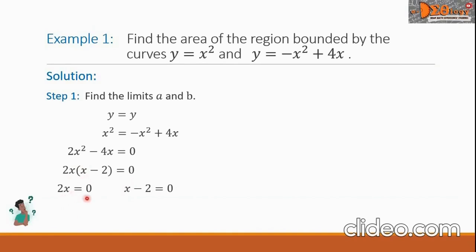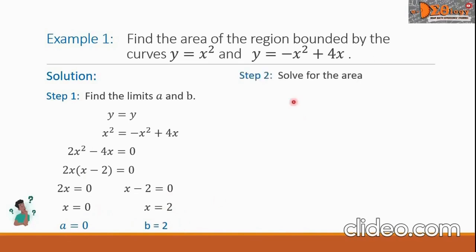Let us equate each factor to 0. So we have 2x equals 0 and x minus 2 equals 0. Solving for x in the first factor, we have x equals 0. While for the second factor, x equals 2. Therefore, we can write A and B: A equals 0, because this is the smaller value of x, and B equals 2, the bigger value. Step 2 now is to solve for the area. Let us write the formula and choose f of x and g of x respectively.